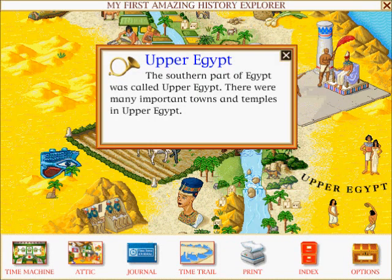The southern part of Egypt was called Upper Egypt. There were many important towns and temples in Upper Egypt.